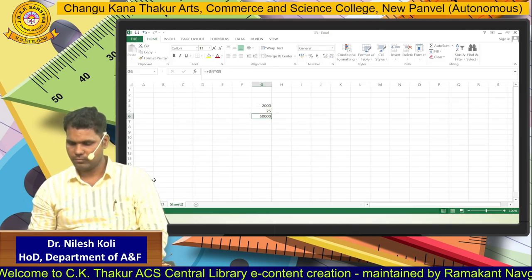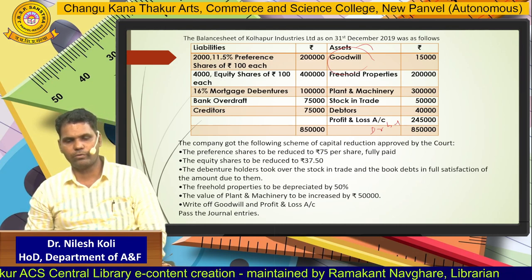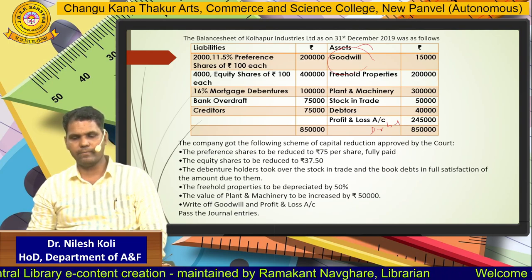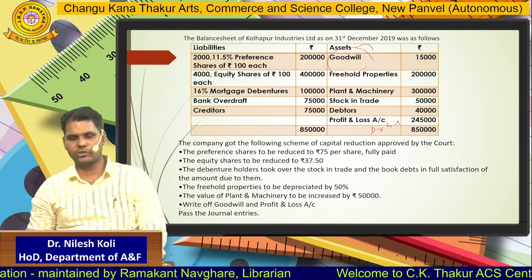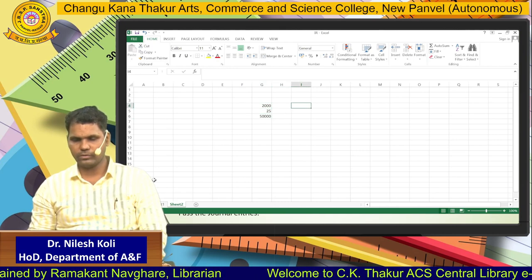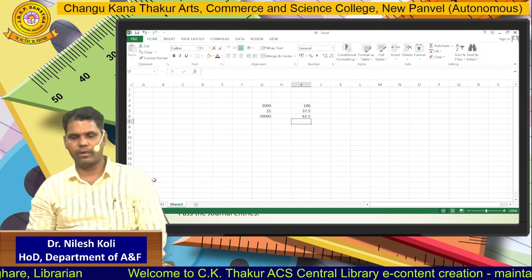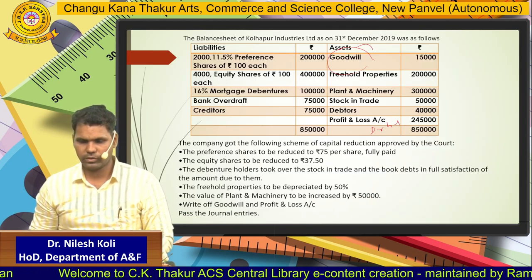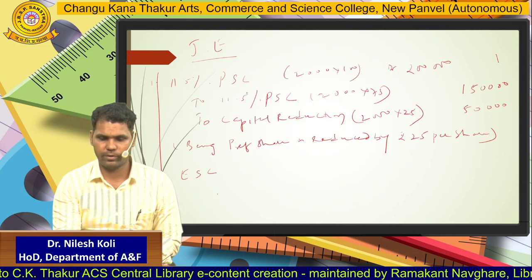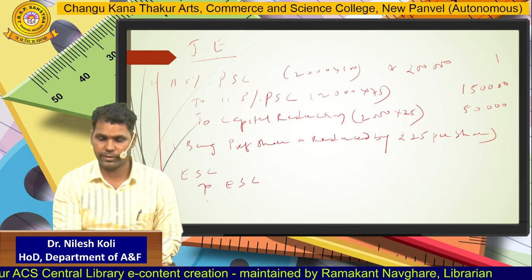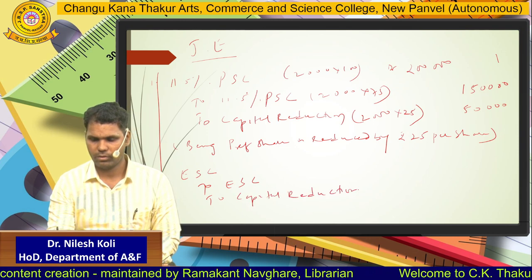Second entry: equity shares to be reduced to ₹37.50. The equity share value was ₹100, reduced to ₹37.50, meaning it is reduced by ₹62.50. The entry is: equity share capital account debit, to equity share capital account credit, and to capital reduction account.